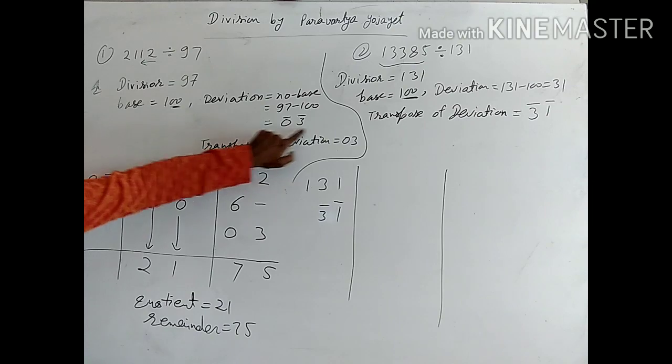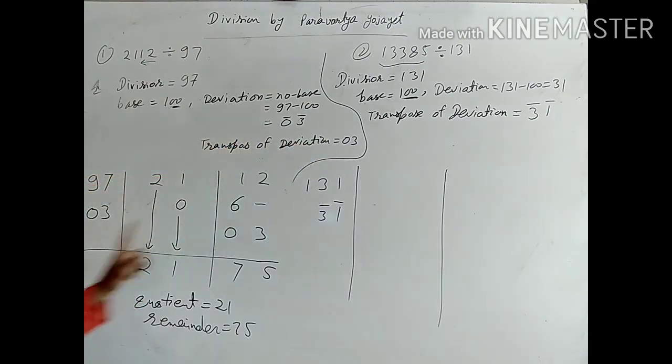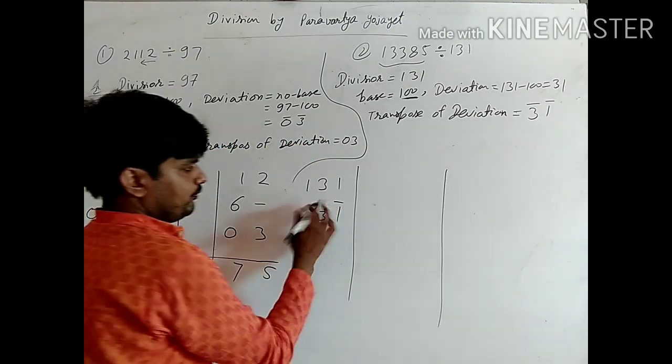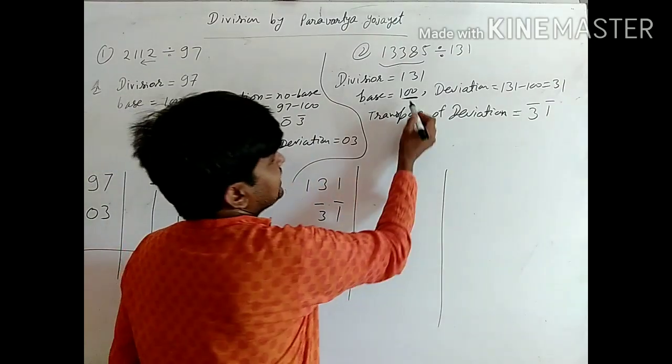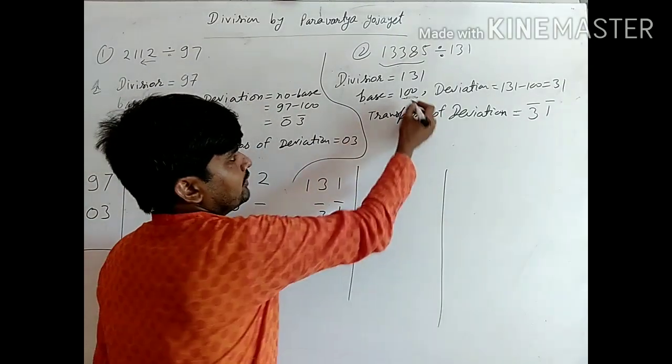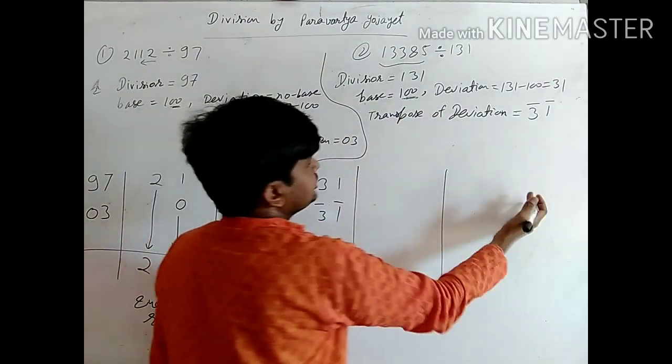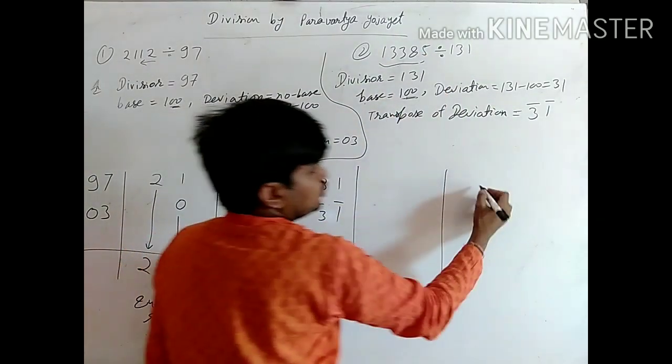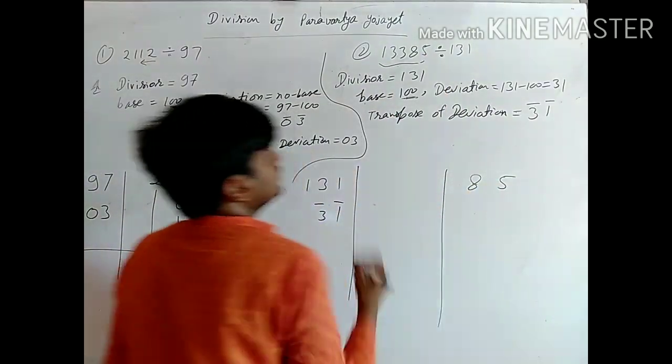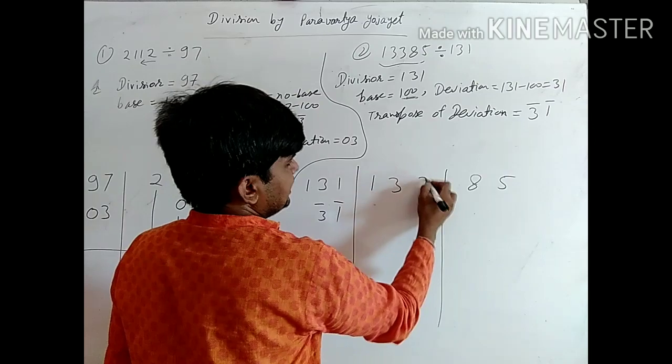Here our deviation was negative, so we converted it to positive. Now what is our base? How many zeros are there? Two zeros. Base has two zeros, so two digits from the dividend we'll write on this side, remaining digits we'll write here.